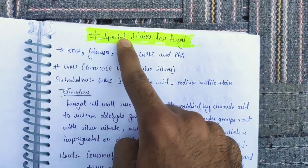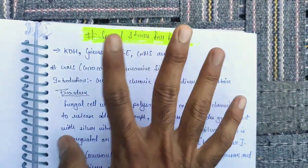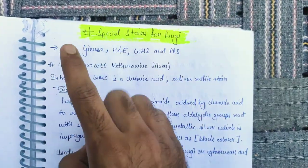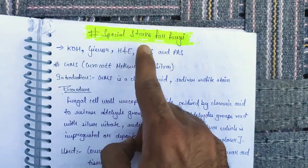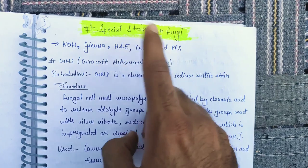Today's topic is special stain for fungi. There are 5 kinds of stains that work for fungi, which are GYMS, HND, GMS and PAS.